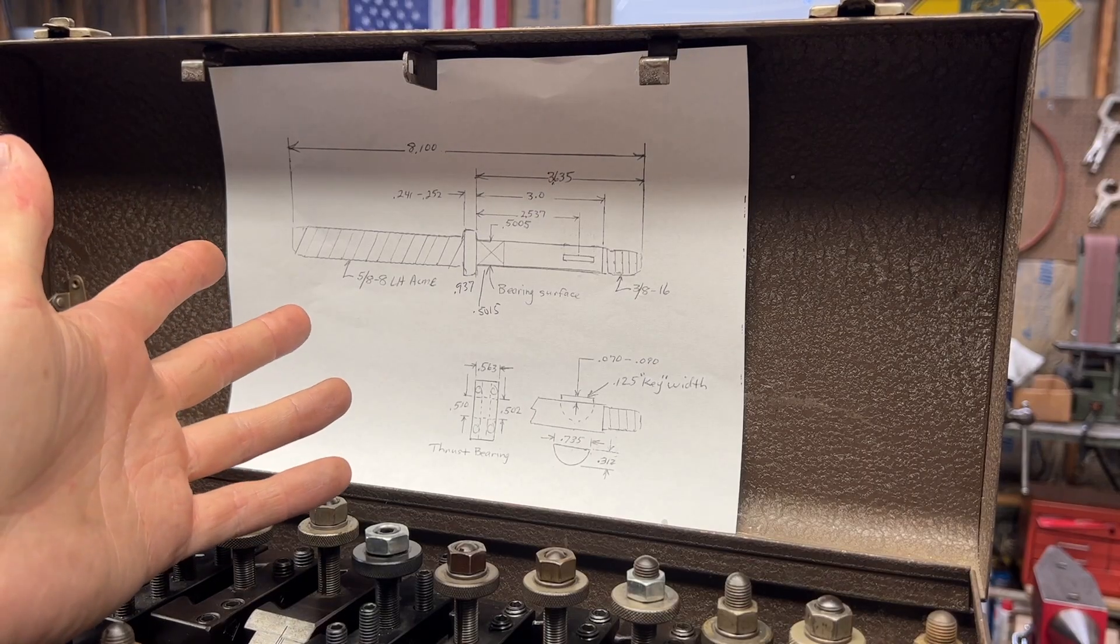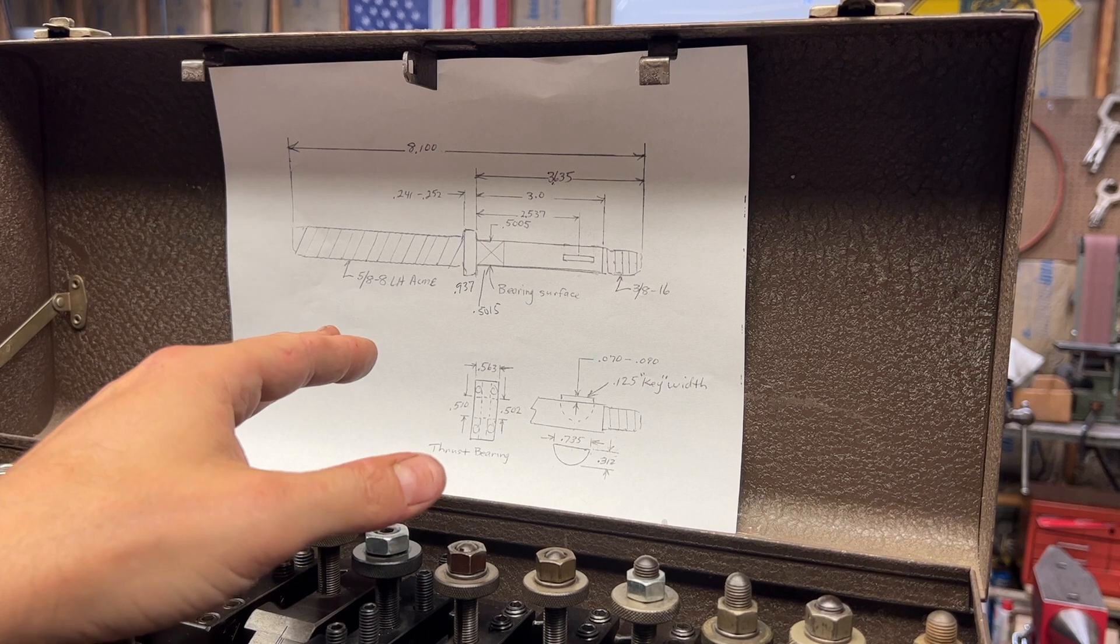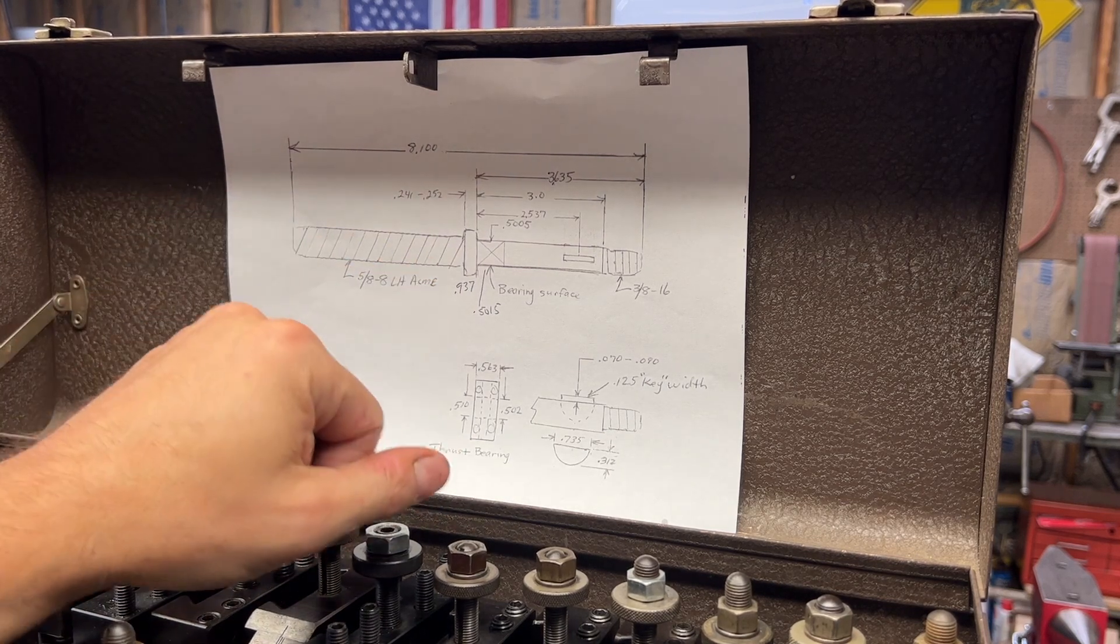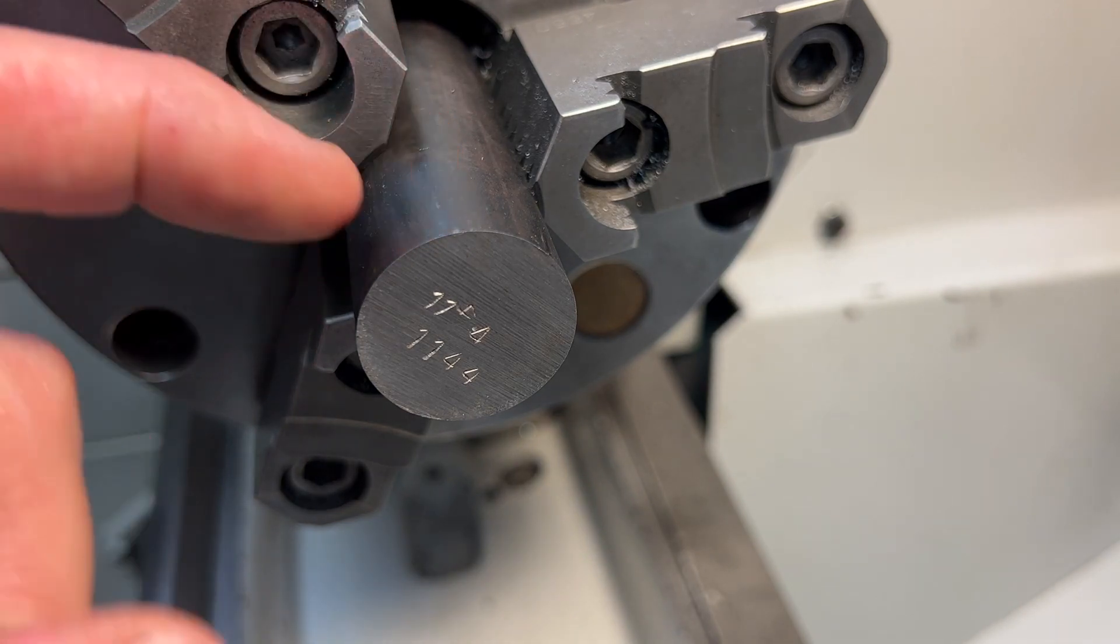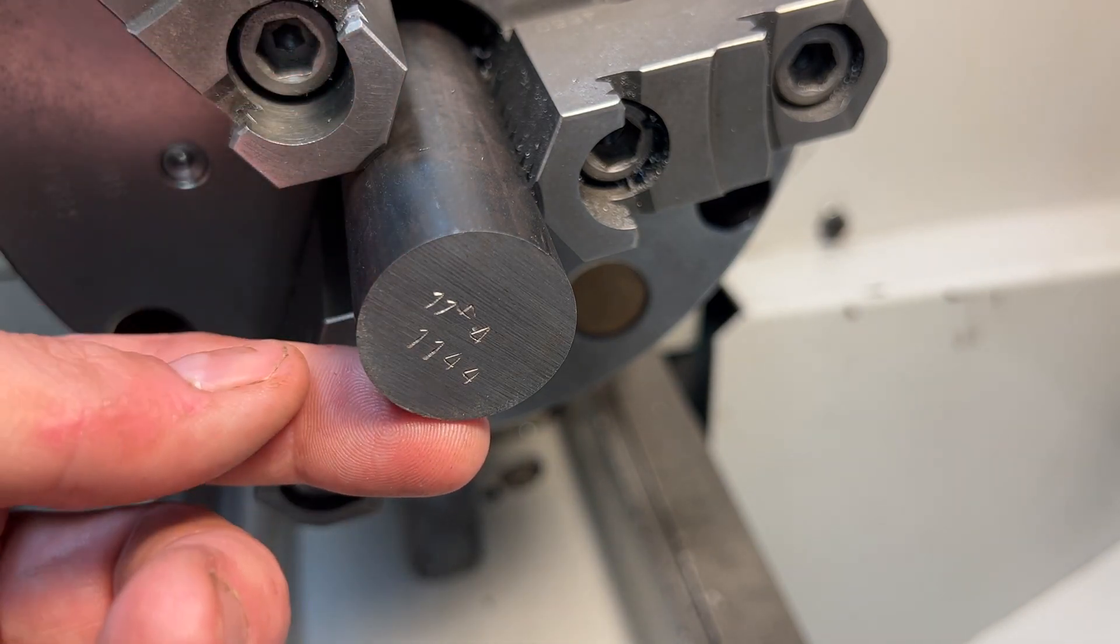What we'll be making today is a tailstock feed screw, as is depicted here in this lovely drawing sent to me by the client. And we will be making the part out of this piece of 1144 stress-proof steel.